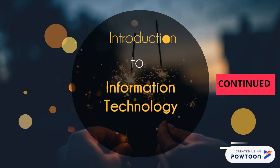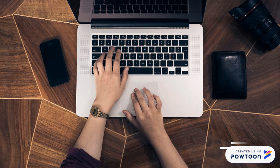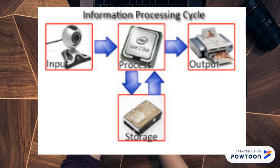Let us look at the actual flow of information in terms of IPOS. When we talk about the flow of information, or the stages in processing, what we're looking at is how information goes through the system in terms of IPOS — which stands for input, processing, output, and storage.